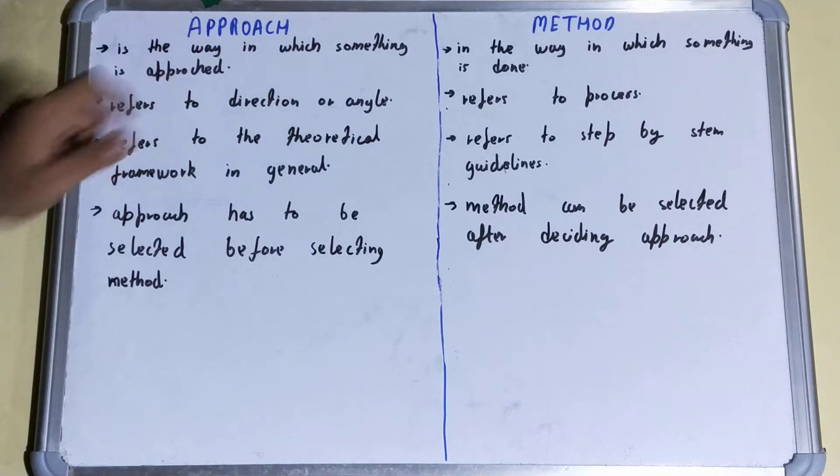If we talk about the approach, it is the way in which something is approached - basically the style you are following. But if you talk about the method, it is the way in which something is done, the actual process in which something will be done.